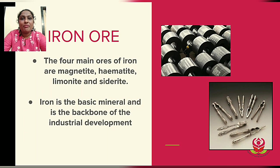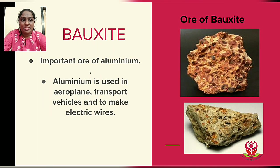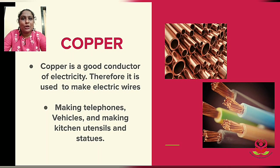Iron is a basic mineral and is the backbone of industrial development, ranging from a small safety pin to heavy electrical equipment and farming implements. Next is bauxite, which is an important ore of aluminium used in aeroplanes, transport vehicles, and to make electric wires. Copper is obtained in its free state and is a good conductor of electricity, so it is used to make electric wires, telephones, vehicles, and kitchen utensils.